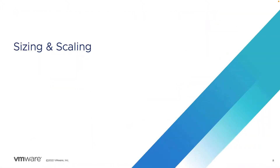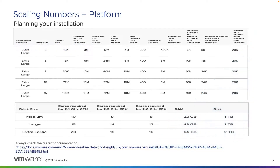So let's move into sizing and scaling. It's really important to call out that when you're dealing with sizing and scaling, you want to make sure — depending on the version of vRealize Network Insight you're deploying or upgrading to — that you check the latest install guide for the current scale. The scale does change with newer versions. We scale up over newer versions to support things like the number of virtual machines, the number of flows, VMware SD-WAN edges, and other different metrics.